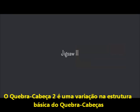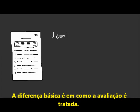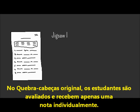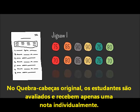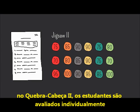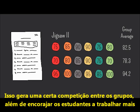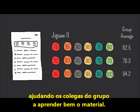Jigsaw 2 is a variation on the basic structure of jigsaw. Developed by Robert Slavin in 1986, Jigsaw 2 makes one significant tweak to the basic jigsaw — the difference is in how the assessment is treated. In Jigsaw 1, students are assessed individually and receive just one score. In Jigsaw 2, quiz scores are given to individual students, then each group's scores are averaged to generate a group score. This builds in competition between groups and encourages students to work harder at helping each other learn the material well.